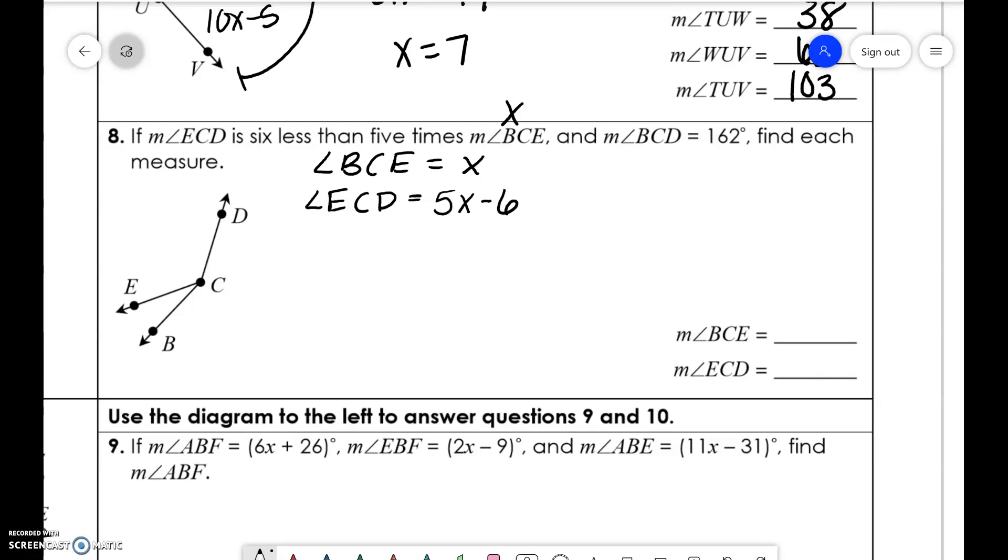Okay. And then BCD, so the whole angle here is 162. So x plus 5x minus 6. So we're adding these two angles together is equal to 162.